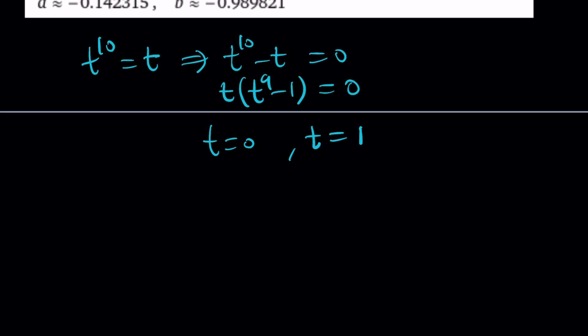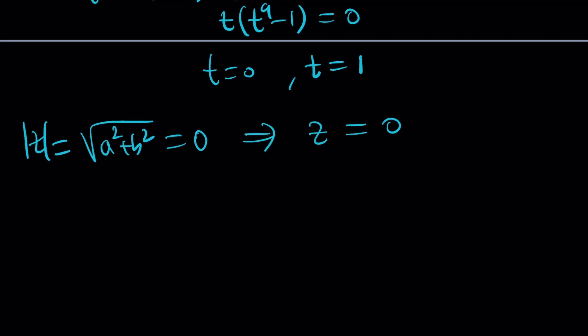Simply put, t is 0 or t is 1. Now t is actually the absolute value of z. If this is 0, then from here obviously z is equal to 0. There's no other number whose absolute value equals 0, only 0. Now if t is equal to 1, then we get something interesting. Because this is non-negative, and when you square both sides, you're going to get a squared plus b squared equals 1. We're going to use that information.